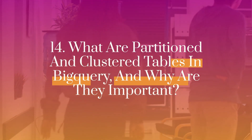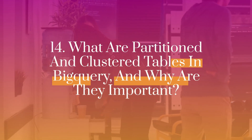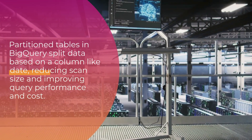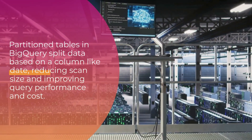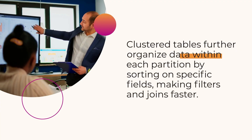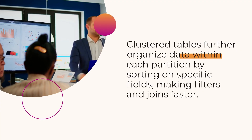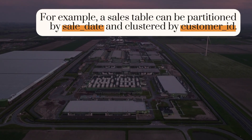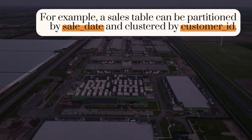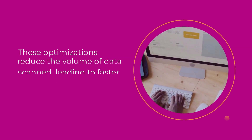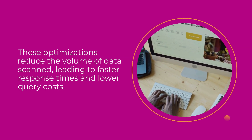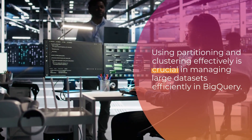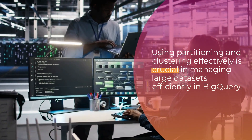Fourteen: What are partitioned and clustered tables in BigQuery, and why are they important? Partitioned tables in BigQuery split data based on a column like date, reducing scan size and improving query performance and cost. Clustered tables further organize data within each partition by sorting on specific fields, making filters and joins faster. For example, a sales table can be partitioned by sale_date and clustered by customer_ID. These optimizations reduce the volume of data scanned, leading to faster response times and lower query costs. Using partitioning and clustering effectively is crucial in managing large datasets efficiently in BigQuery.